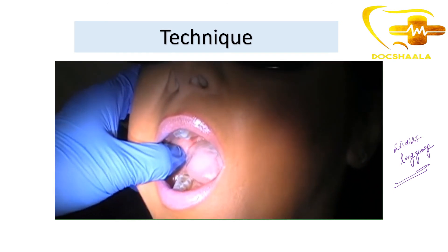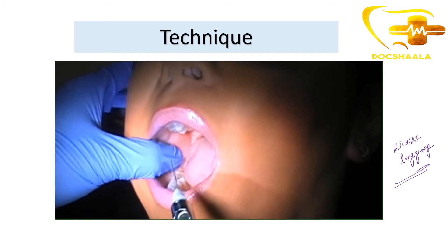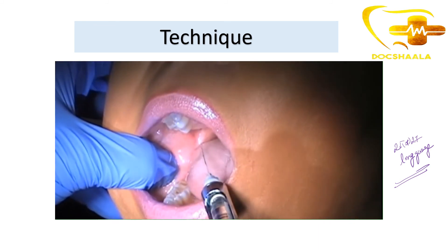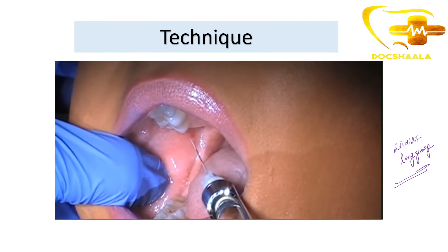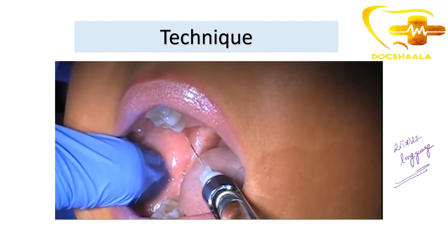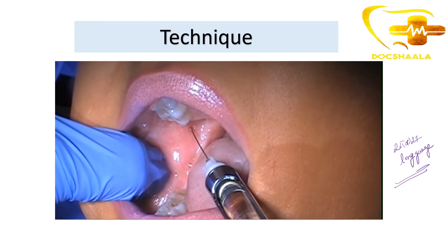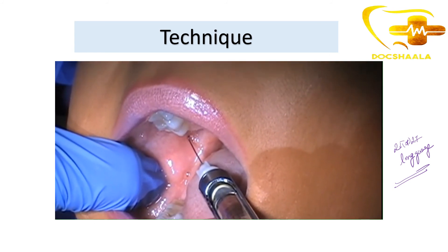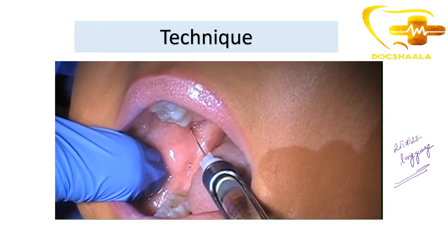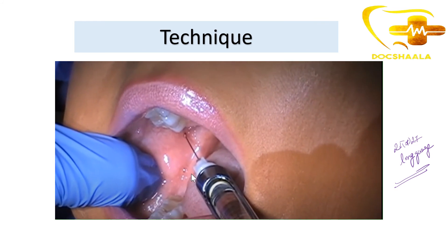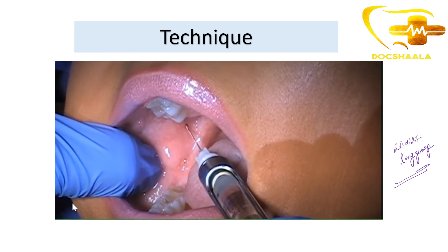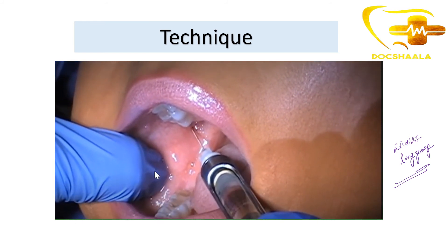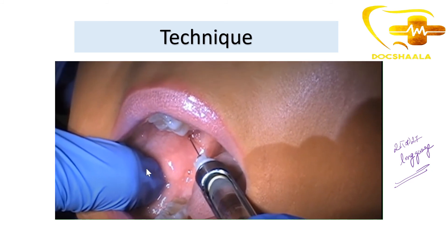After determining the site of injection, we take the needle and you can see how the clinician is directing it from the contralateral corner of the mouth towards just below the mesiolingual cusp of the maxillary second molar. He places the injection, aspirates it, and then injects the local anesthesia. This will help in anesthetizing the entire mandibular nerve at that site.